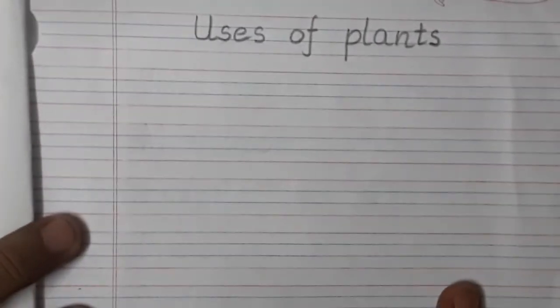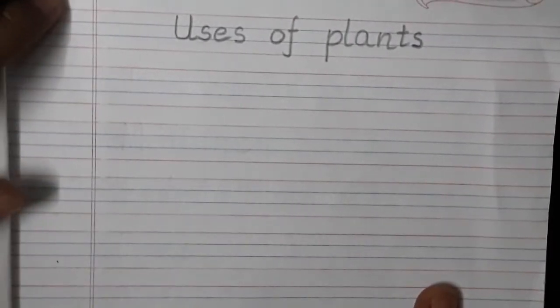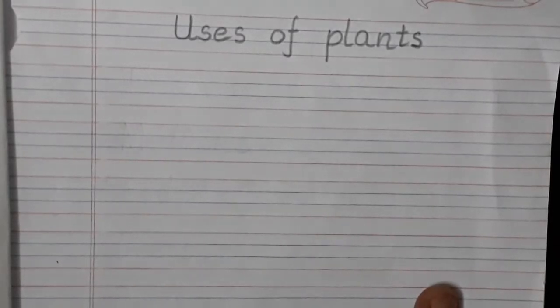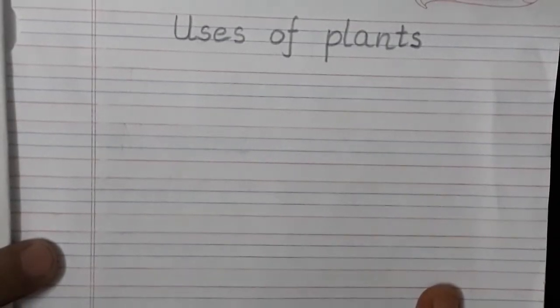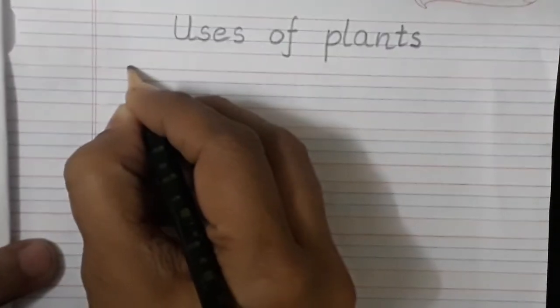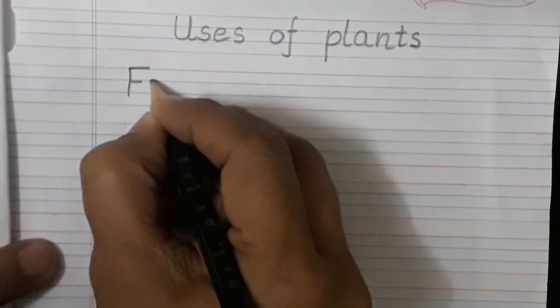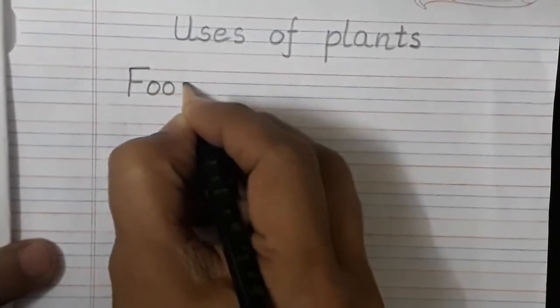Now children, what do we get from plants? You have already learnt about the uses of plants. So first of all, we get fruits and vegetables and pulses and cereals. So we will write food. Let's write the spelling of food, F-O-O-D, food.